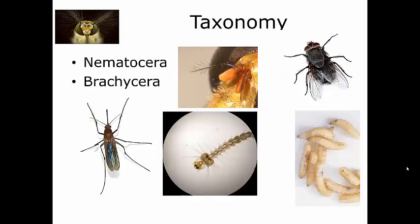Let's talk about the taxonomy of Diptera. The order is divided into two suborders. Remember basic classification: kingdom, phylum, class, order, family, genus, species — with sub-levels in between. The two suborders of Diptera are the Nematocera and the Brachycera. The typical Nematocera looks like a mosquito.